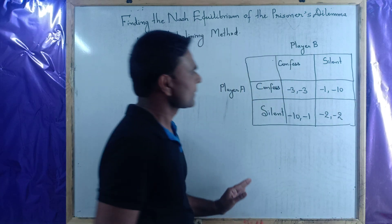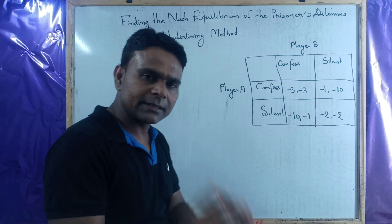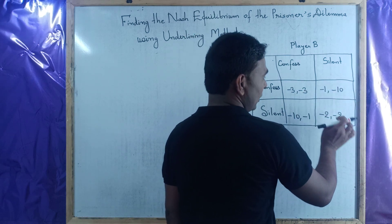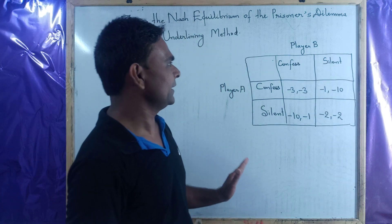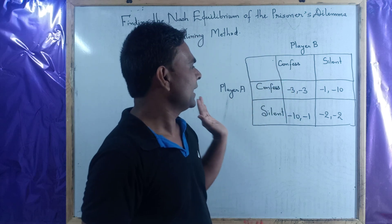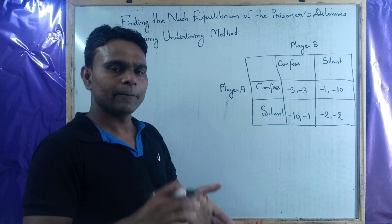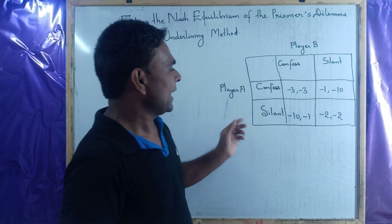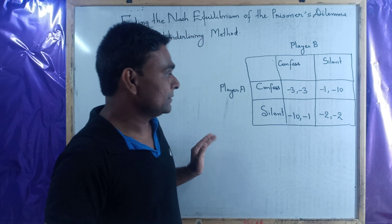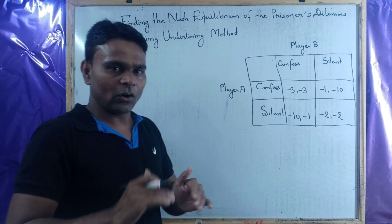Briefly, I would like to tell you: the first digit in each box represents the payoff for Player A, and the second digit in each box represents the payoff for Player B. The values like minus 3, minus 10, minus 1, minus 2 represent the payoff for Player B. The negative numbers indicate the number of years of imprisonment, that is, the jail term for Player A and B.